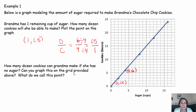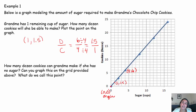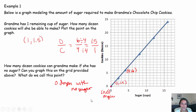How many dozen cookies can grandma make if she has no sugar? Zero cups of sugar means you can make zero dozen cookies, and that point is the origin — (0, 0). That point is going to be on the graph of every proportional relationship.